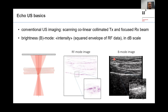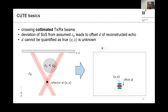In CUTE, we make more use of the flexibility of linear array transducers. We use collimated beams and explicitly steer them at a certain selection of transmit and receive angles. When two beams cross at a point containing a reflector, and there is a region inside the tissue with a different speed of sound than the background, the reconstructed position of the echo will differ from the actual reflector position. This offset is directly linked to the error in the assumed speed of sound C0.